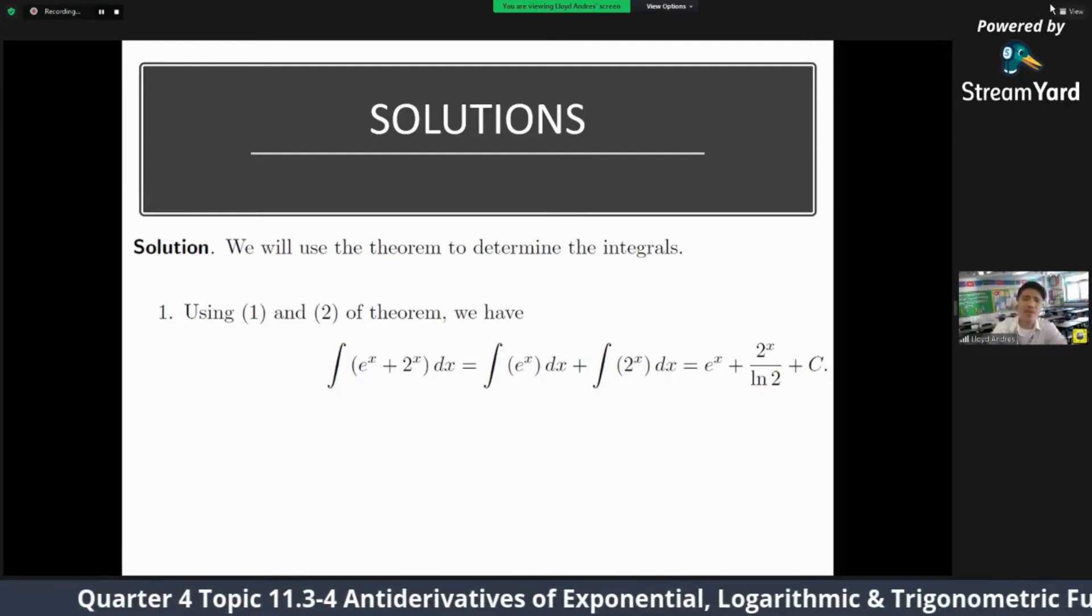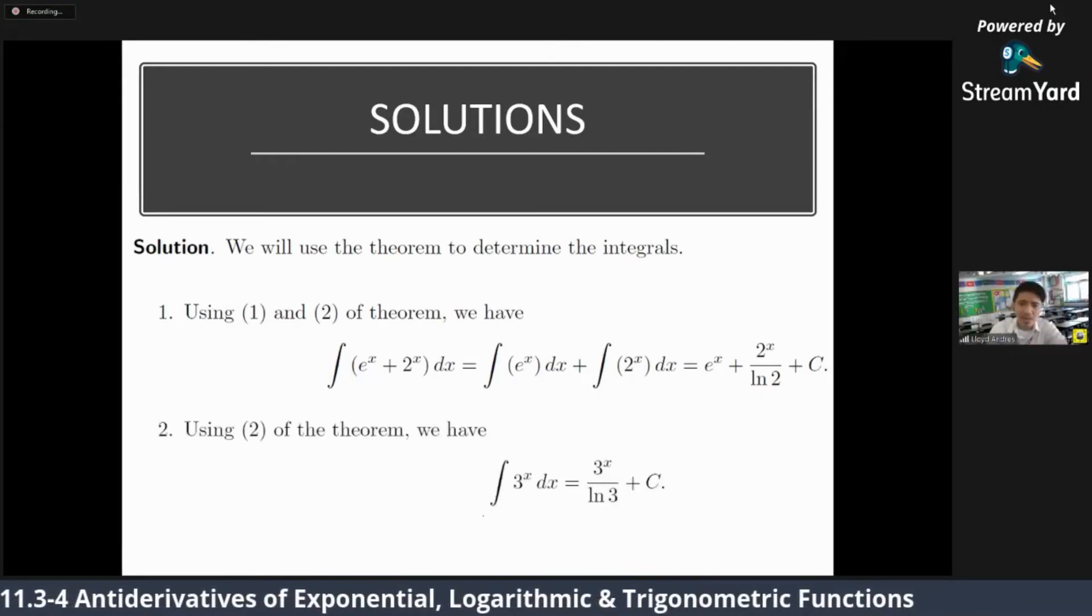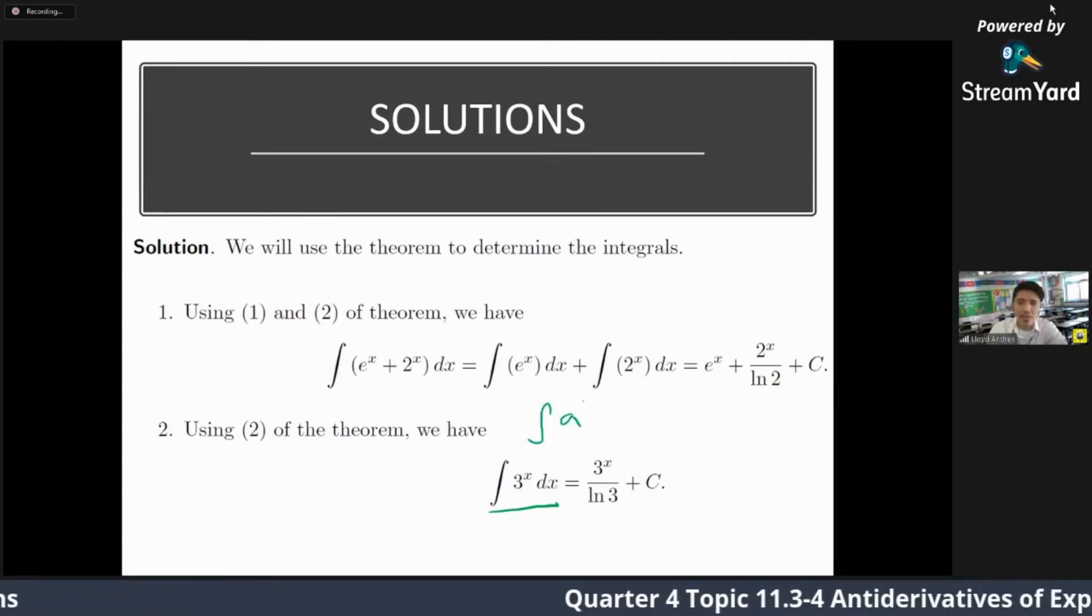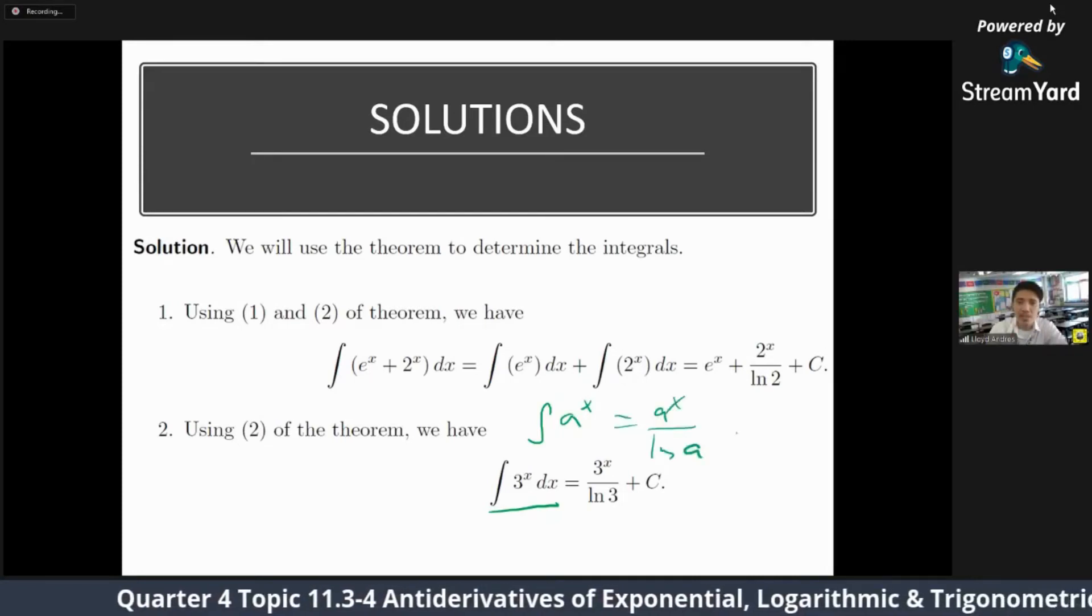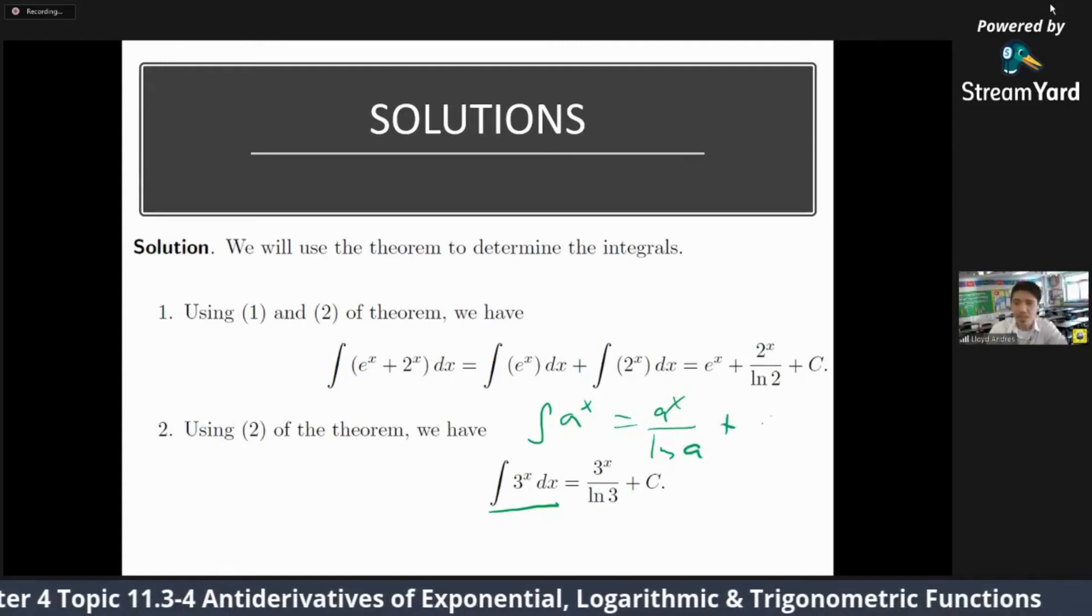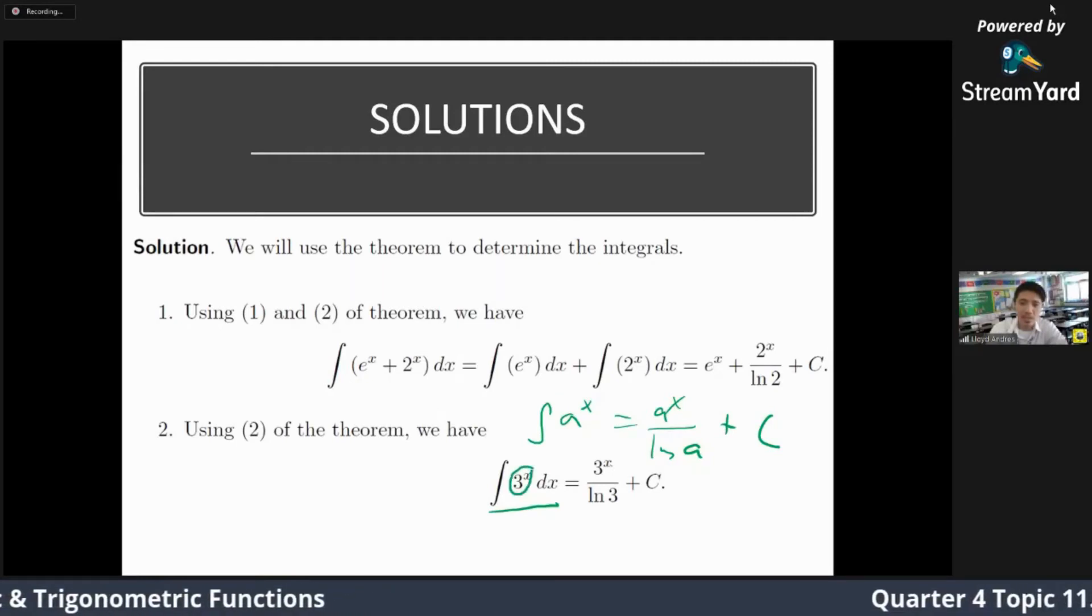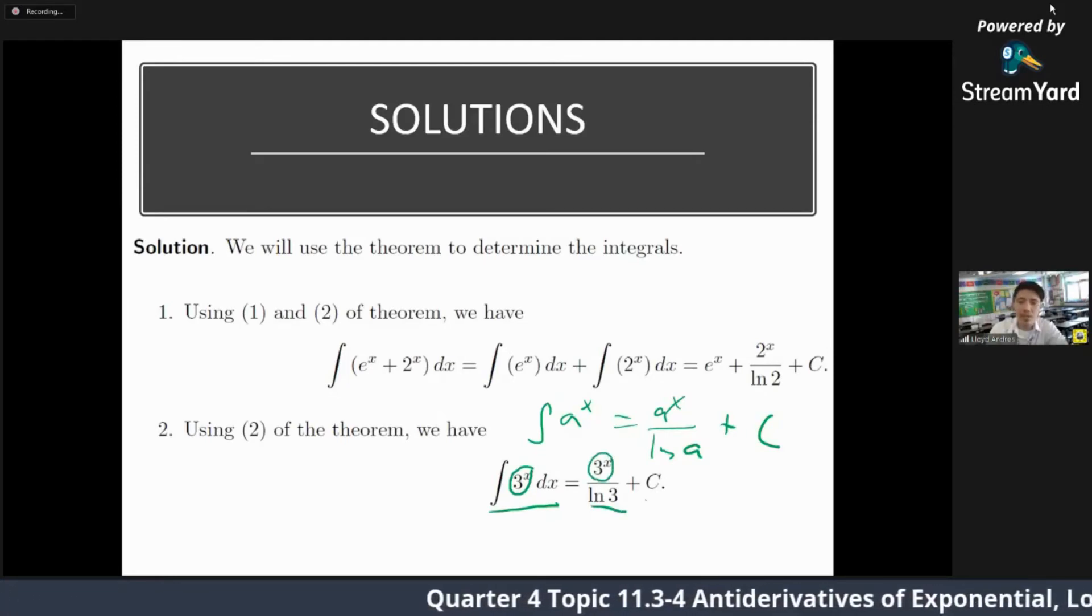Another example, we have here integral of 3 raised to x dx. So this is using theorem 2, the integral of a raised to x, which is a raised to x over ln of a plus c. It's the same form. So a raised to x is this. So the a here, actually, is 3. It becomes 3 raised to x, ln of 3. Then again, don't forget the plus c. So that's your answer.